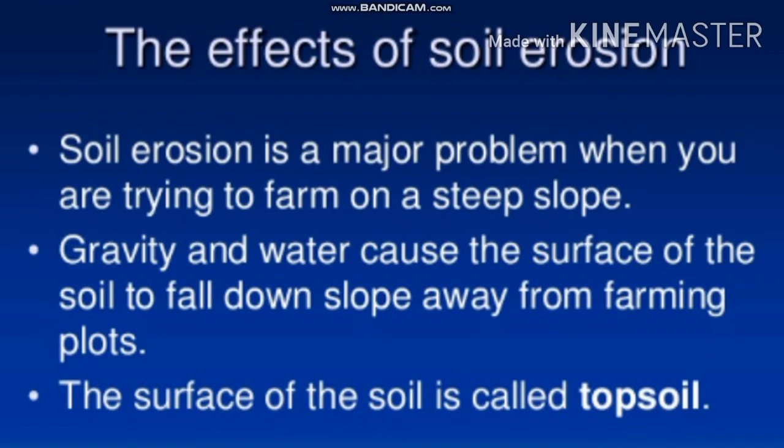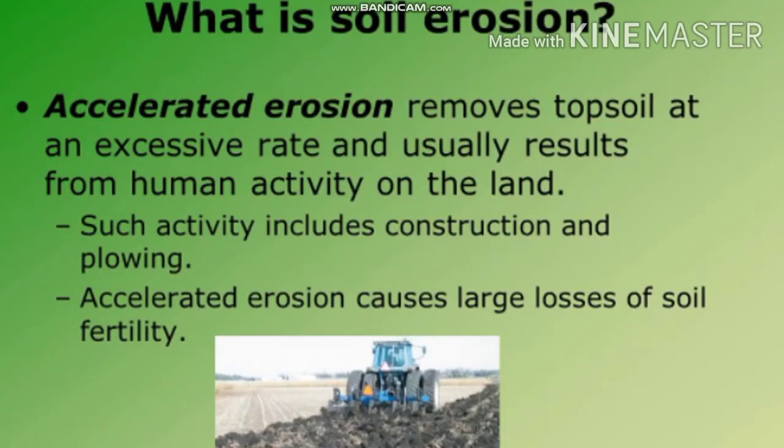The surface of the soil is called topsoil. Accelerated erosion removes topsoil at an excessive rate and usually results from human activity on the land.